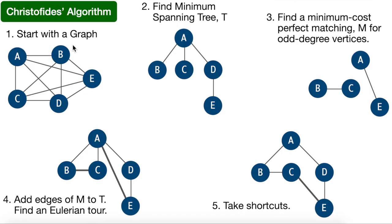For Christofides algorithm, we start with a complete graph, find our minimum spanning tree, and identify vertices with an odd degree. Here, node D is the only vertex with two edges — an even degree. All others — A, B, C, and E — each have an odd number of edges, so they are odd degree vertices. A has three edges, while B, C, and E each have one.